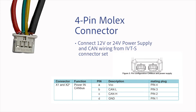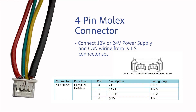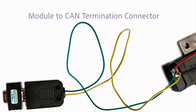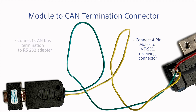Second, we will wire the 4-pin Molex mating connector. We will connect the 12 or 24 volt power supply and CAN wiring to the 4-pin Molex mating connector from the IVTS connector set as shown. After that, we will connect the 4-pin Molex mating connector to the IVTS X1 receiving connector. Then we will connect the CAN bus termination connector to the RS-232 adapter.